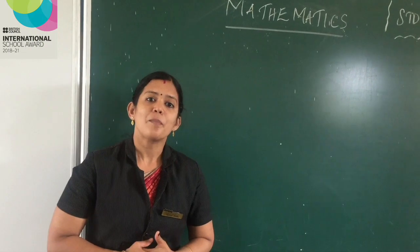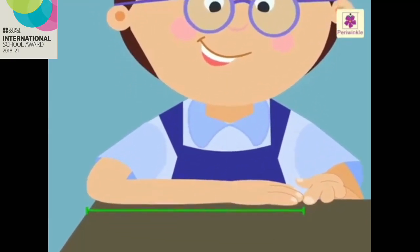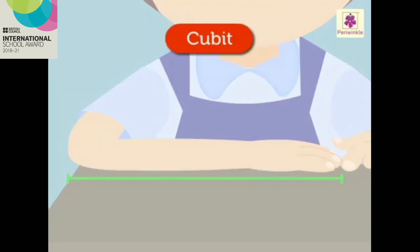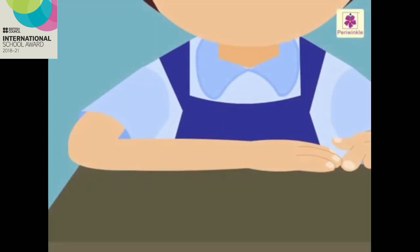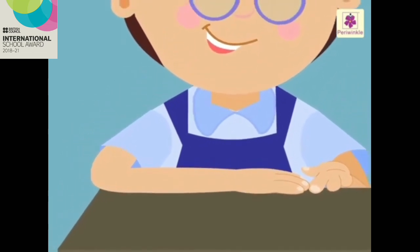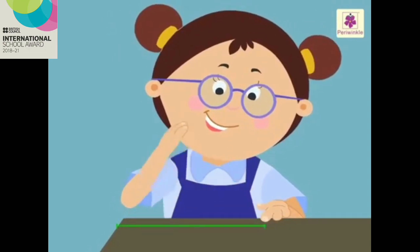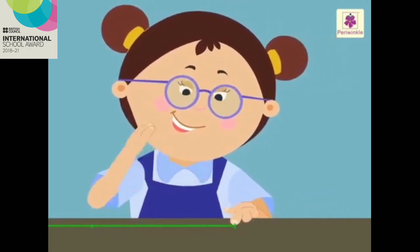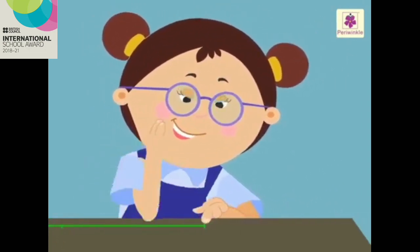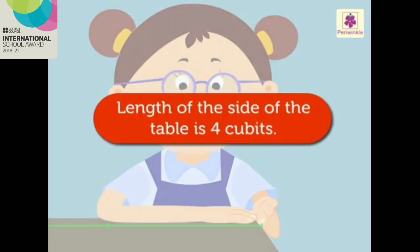Now let's see how to measure with cubit. Cubit is the length from the elbow to the end of the fingers. Now Lisa is measuring the side of the table with her cubit: one, two, three, four. So the length of the side of the table is four cubits.